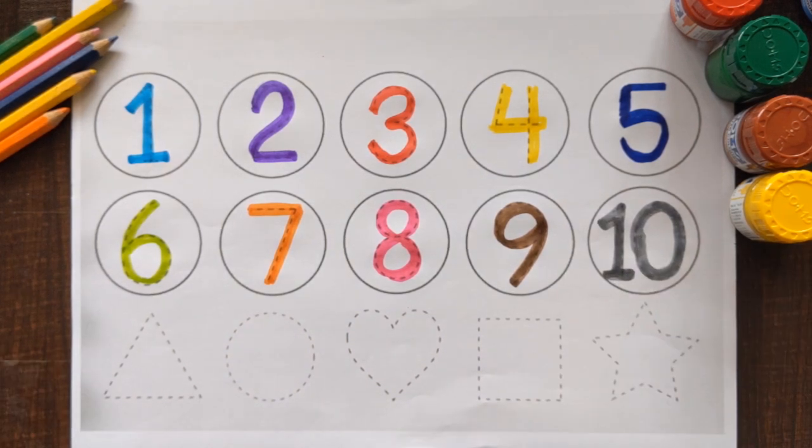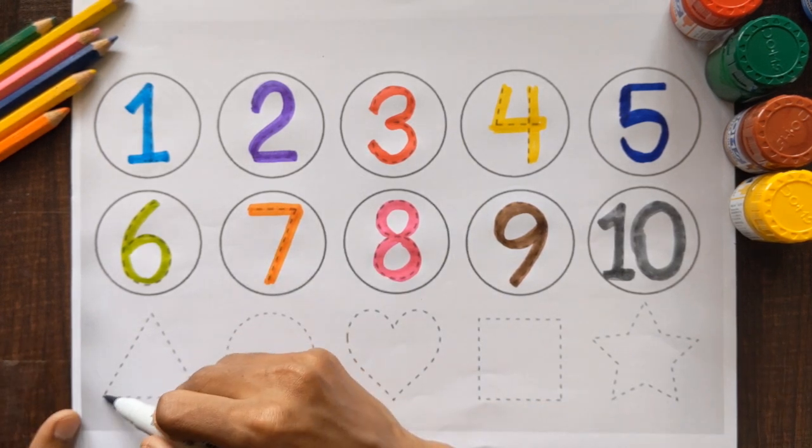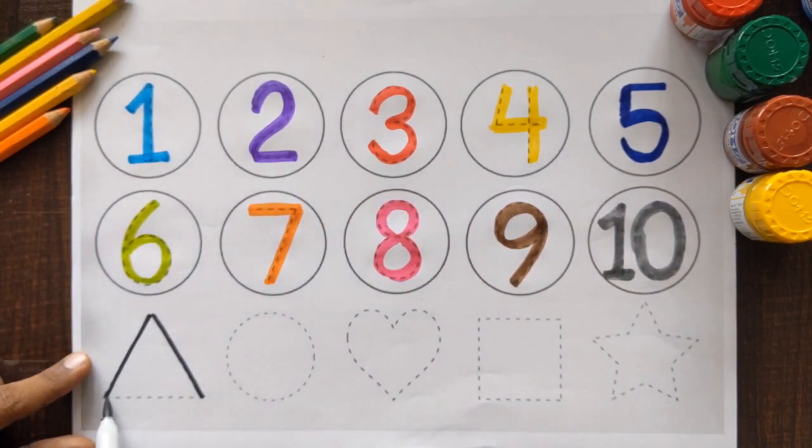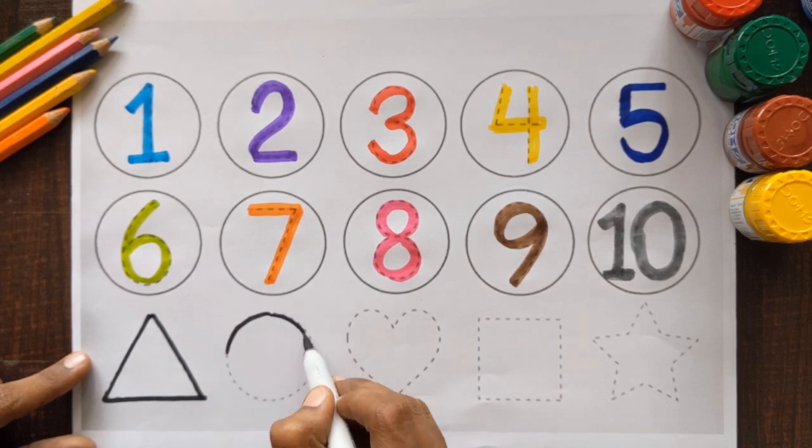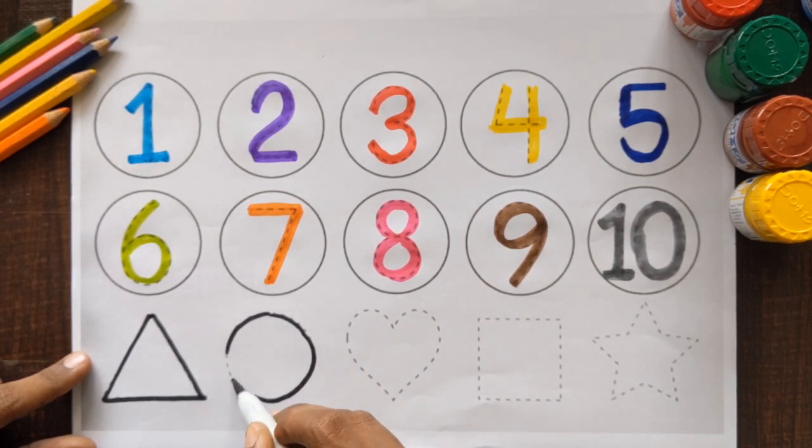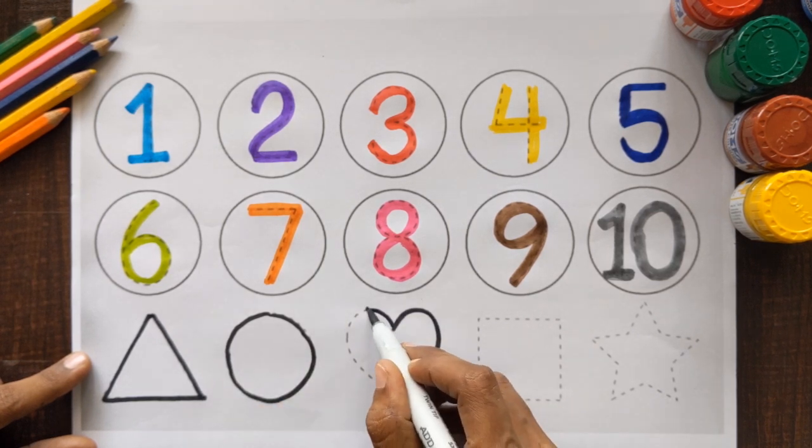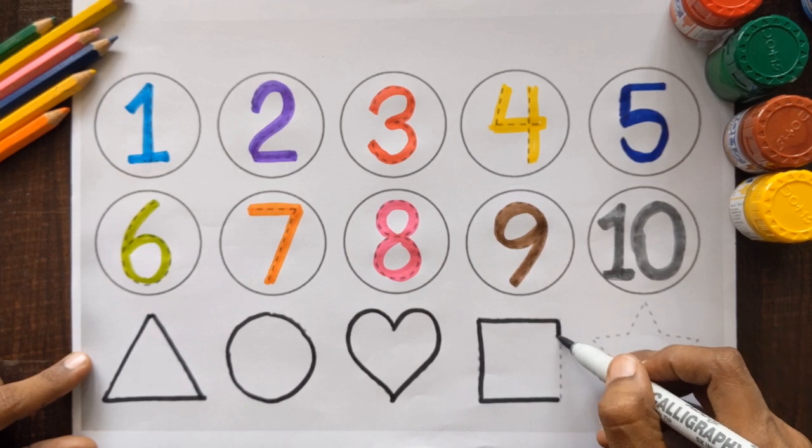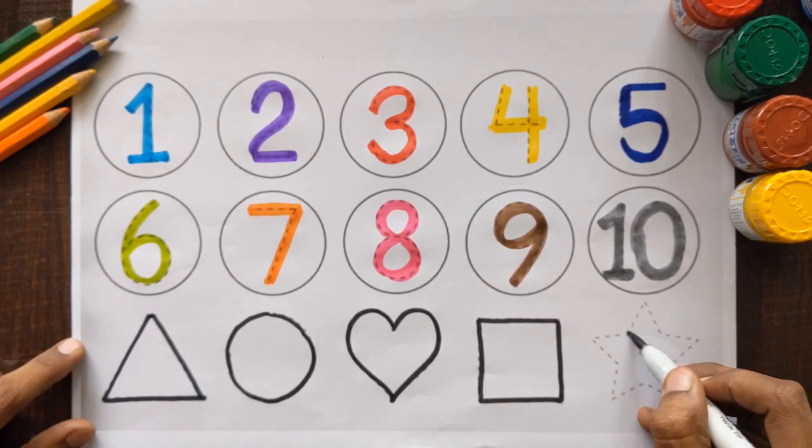Let's trace the shapes. Black color. Triangle. Circle. Heart. Which shape is this? Can you tell me? It's a square and star.